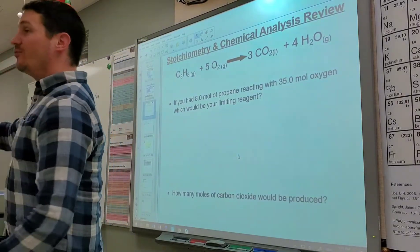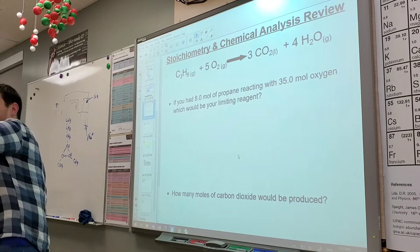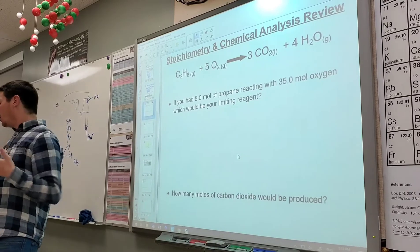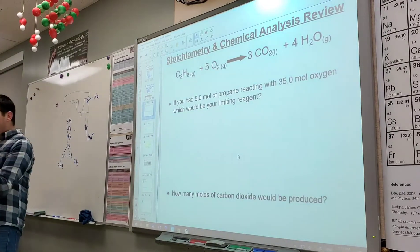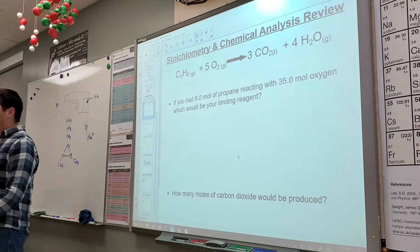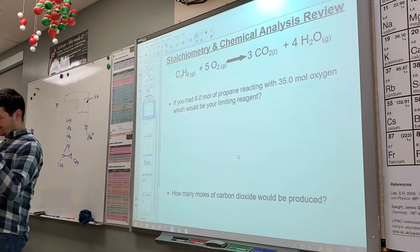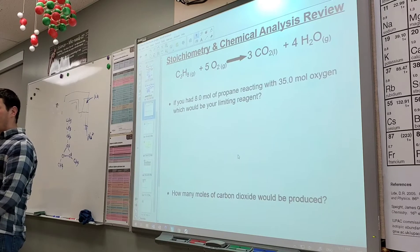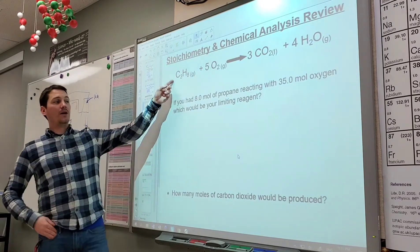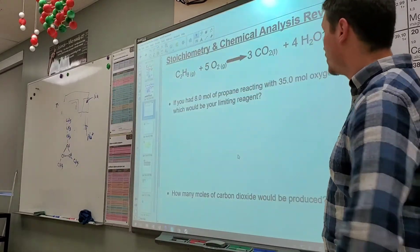Stoichiometry is about relating quantities of one chemical to quantities of another chemical. The key way we do that is through the molar ratio. Anytime you want to relate amounts of one thing to amounts of another thing, you're going to need the molar ratio.